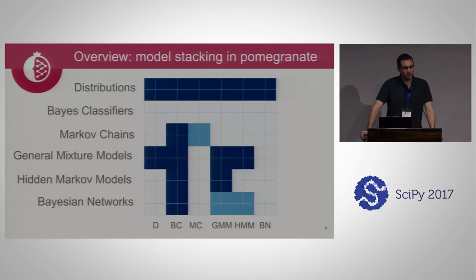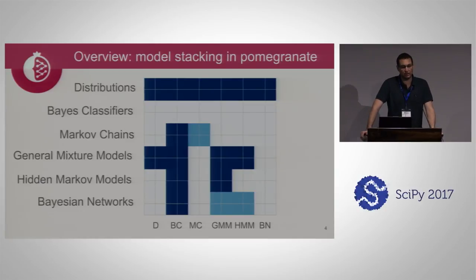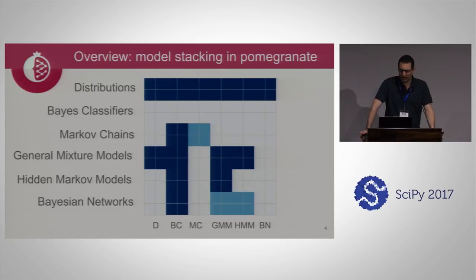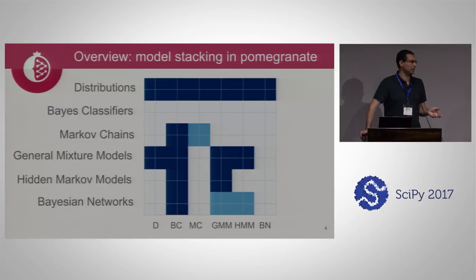One thing this allows us to do is stack these models in ways that other packages don't. I have here distributions as rows and distributions you can stack inside other distributions as columns. You can stack a normal distribution inside a Bayes classifier and get Gaussian Naive Bayes. A more complex model might be a GMM-HMM, where you put a mixture model as the emissions for your hidden Markov model. If you want a classifier over sequences, you might put hidden Markov models inside your classifier to get a hidden Markov model Bayes classifier.